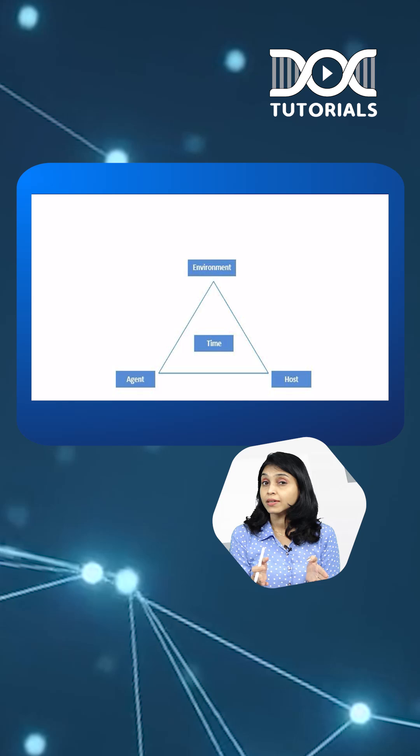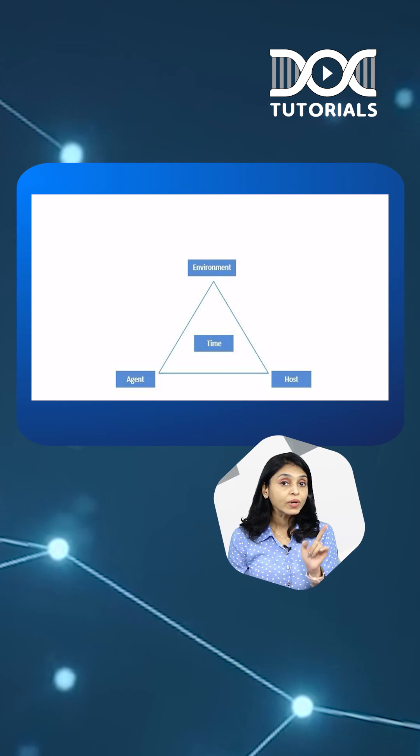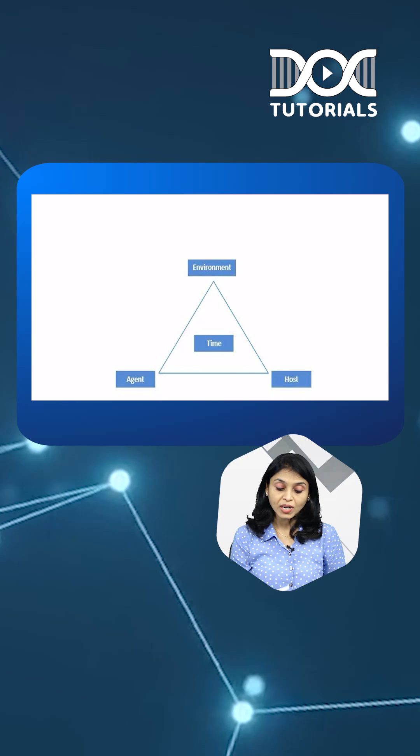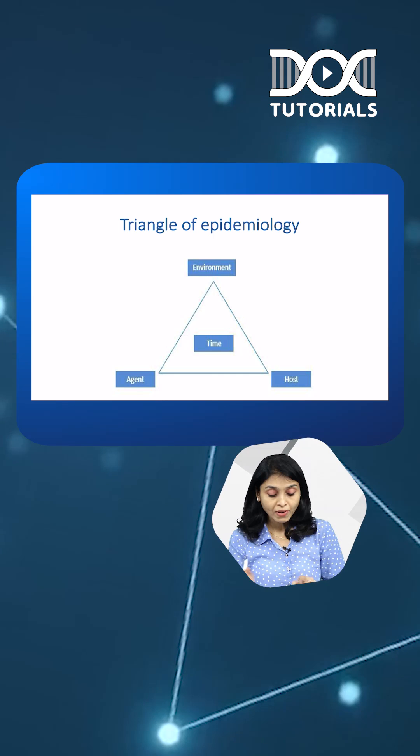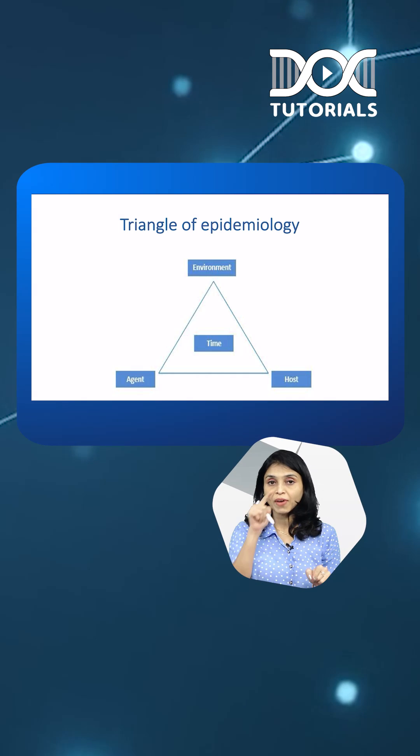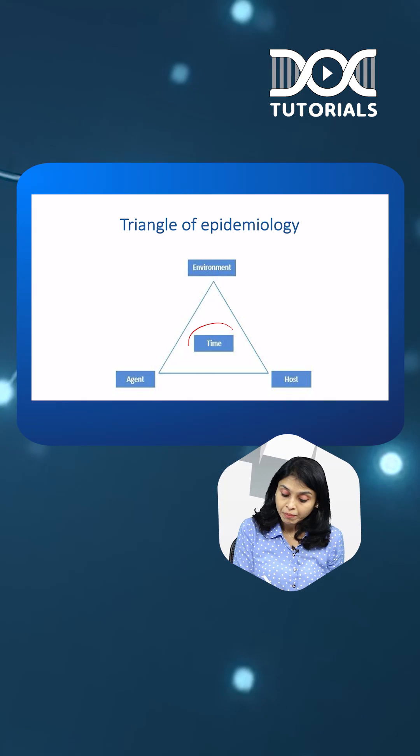You can't call it as triad anymore. So we have given a new name for these four factors which is known as triangle of epidemiology where you can see in this picture there is a triangle of agent, host, and environment and time in the middle.